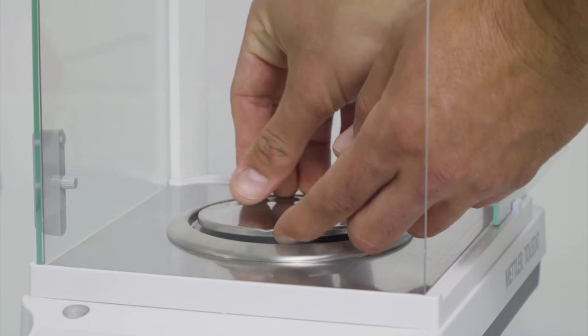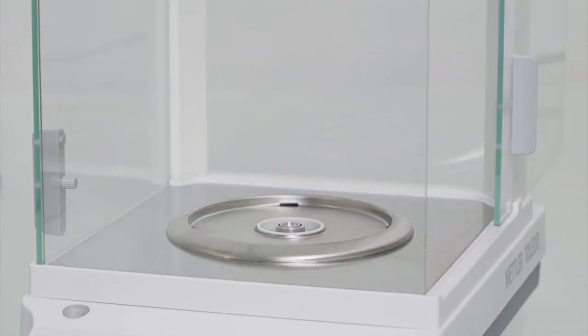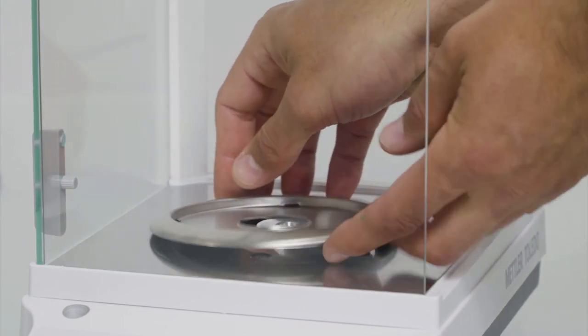MET balances are designed to make cleaning easy. They have smooth and flat surfaces and are made of durable and chemical resistant materials.